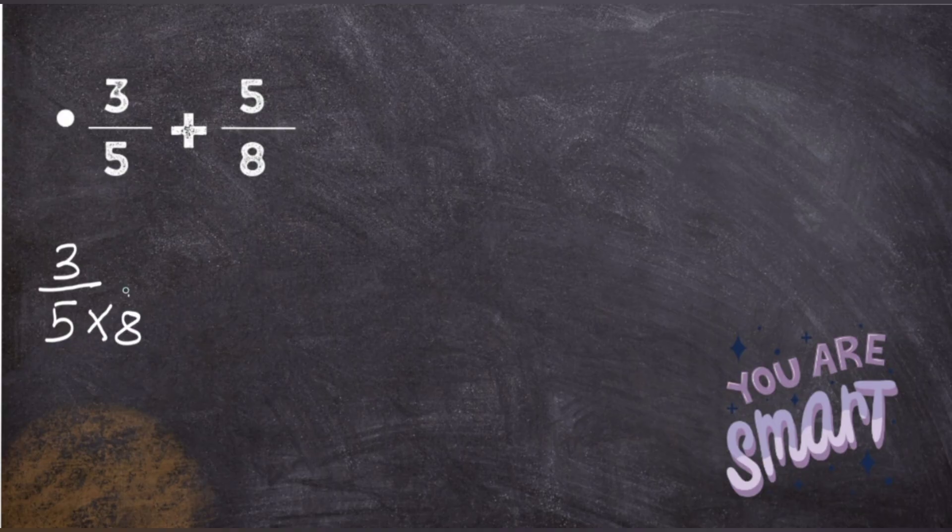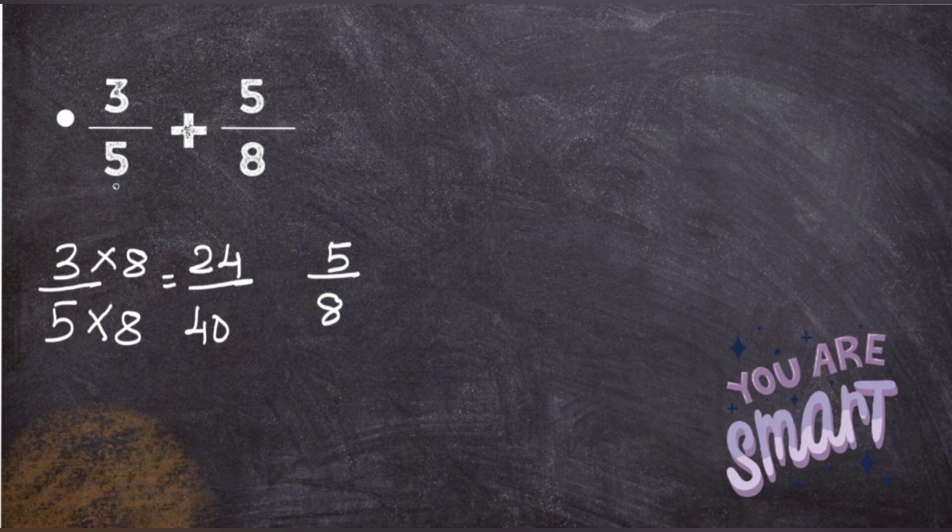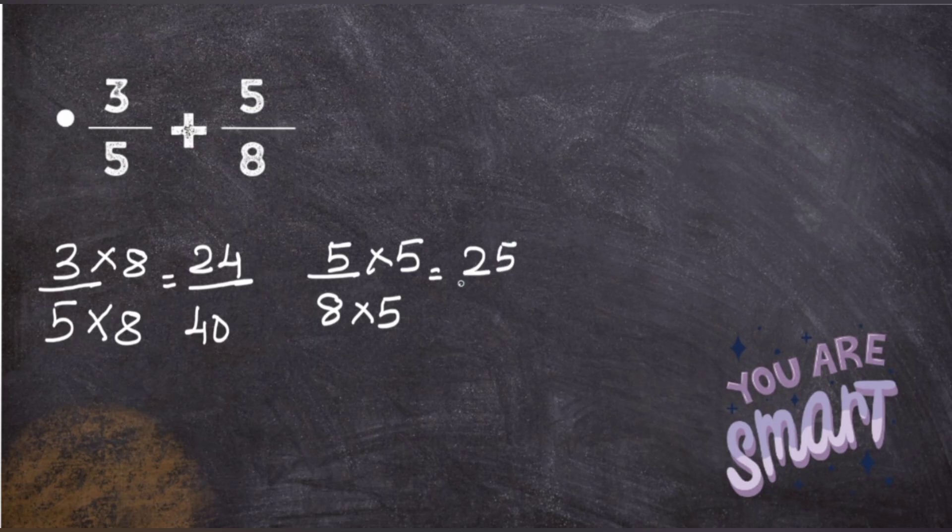Simply go and multiply both numerator and denominator by 8, and that gives you answer as 24 upon 40. Now take another fraction, that is 5 upon 8, and multiply it with the denominator of the first fraction, which is 5. So the answer you get is 25 upon 40.